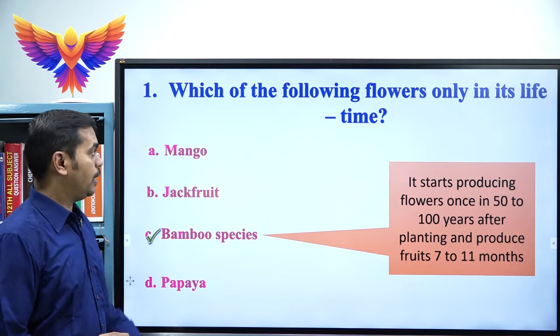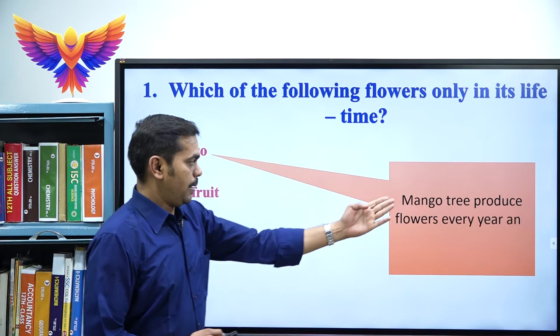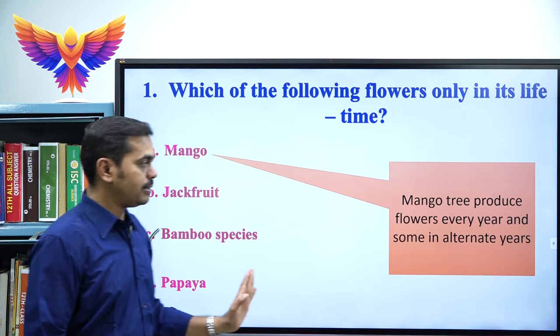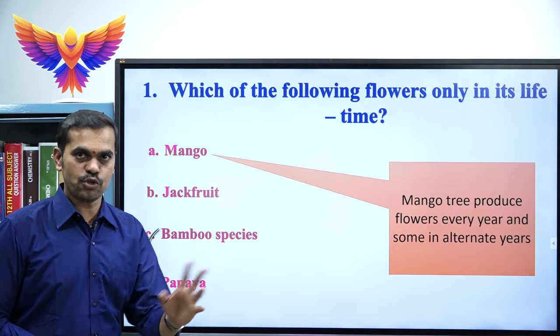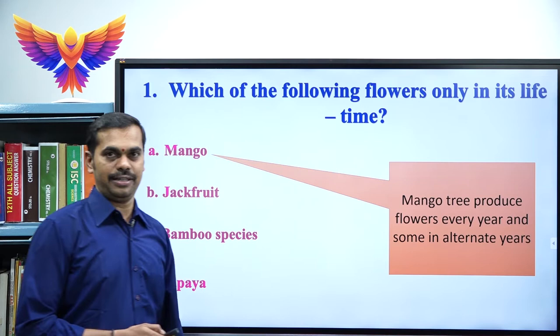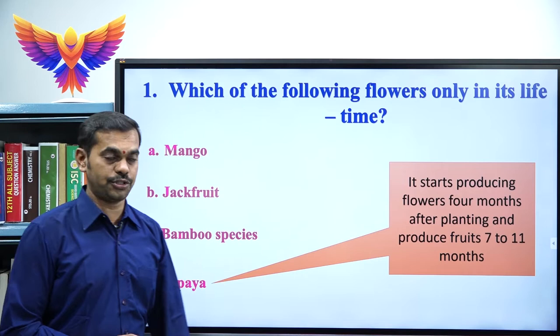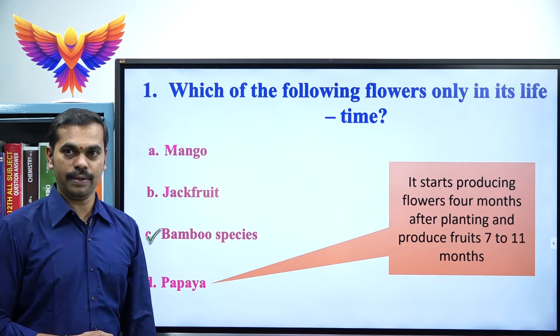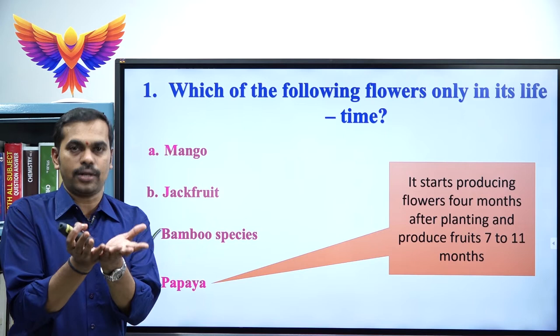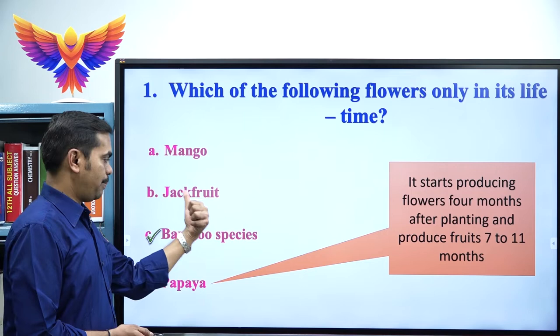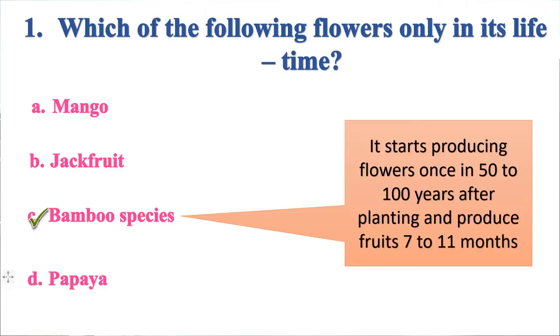Option A, mango: the mango plant produces flowers every year, though in some species it produces flowers in alternate years. Option D, papaya: it starts producing flowers 4 months after planting and produces fruits after 7 to 11 months. Option B, jackfruit: the fruit is produced from the entire inflorescence. Therefore, option C, bamboo species, is the correct answer.